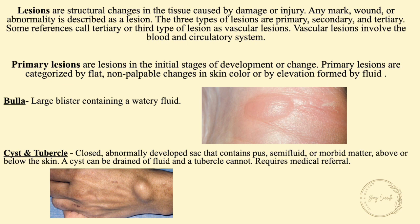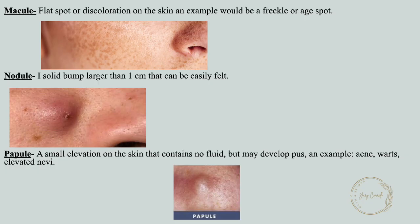A bulla is a large blister containing a watery fluid. A cyst or tubercle is a closed, abnormally developed sac that contains pus, semi-fluid, or morbid matter above or below the skin. A cyst can be drained of fluid, but a tubercle cannot — it requires medical referral. A macule is a flat spot or discoloration on the skin; an example would be a freckle or age spot. A nodule is a solid bump larger than one centimeter that can be easily felt.